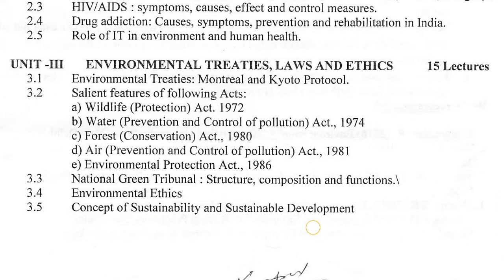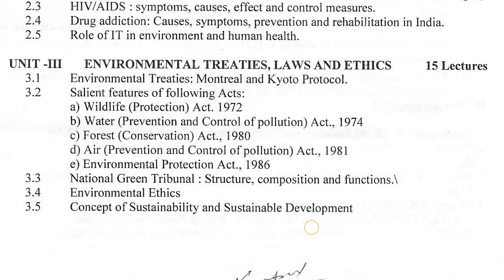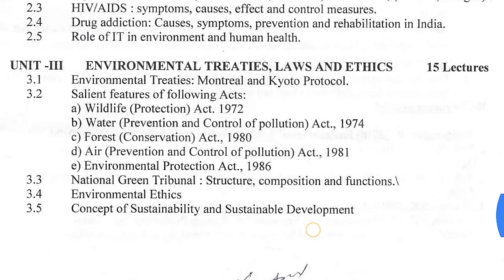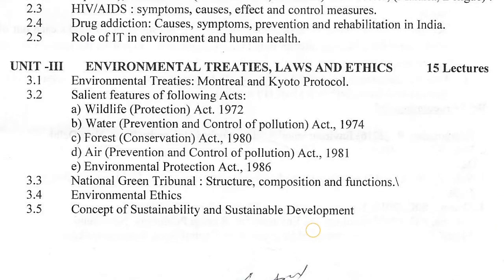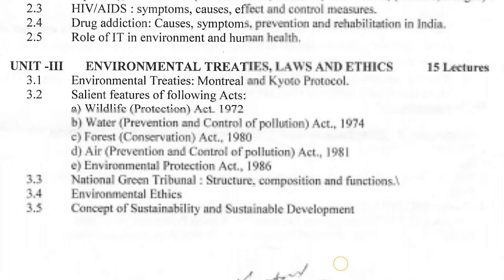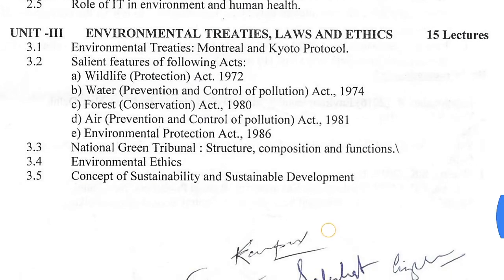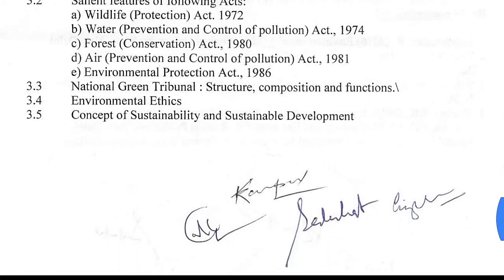The third unit covers environmental treaties, laws and ethics. Topics include environmental treaties like the Montreal Protocol and Kyoto Protocol; salient features of acts including the Wildlife Protection Act 1972, Water Prevention and Control of Pollution Act 1974, Forest Conservation Act 1980, Air Prevention and Control of Pollution Act 1981, Environmental Protection Act 1986; the National Green Tribunal — its structure, composition and functions; environmental ethics; and the concept of sustainability and sustainable development.